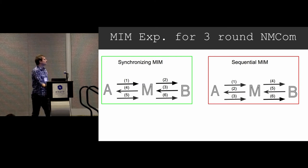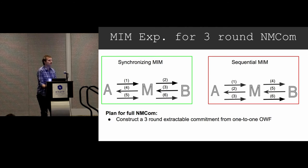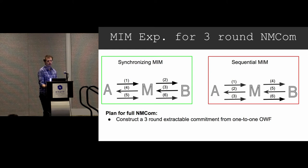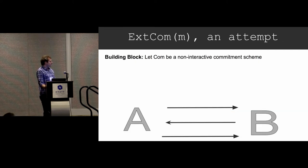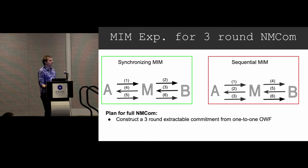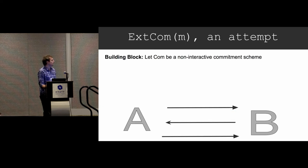We're stuck at the sequential man-in-the-middle, and our plan is clear: we need to build a three-round extractable commitment in order to get non-malleability against the sequential man-in-the-middle. Before I get into it, I want to convince you that it's a hard problem by going through an example attempt at an extractable commitment scheme and telling you why it doesn't work.